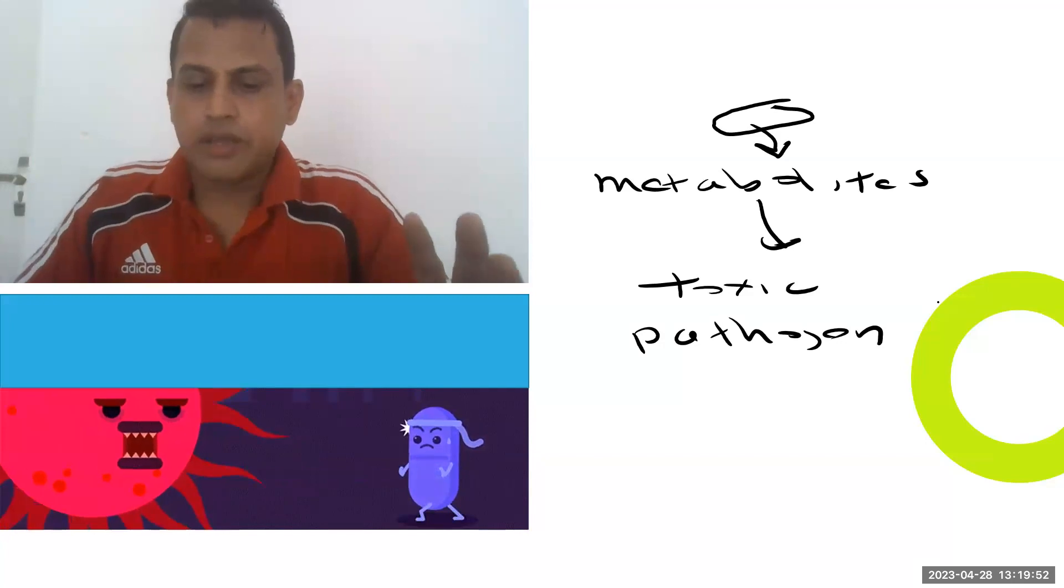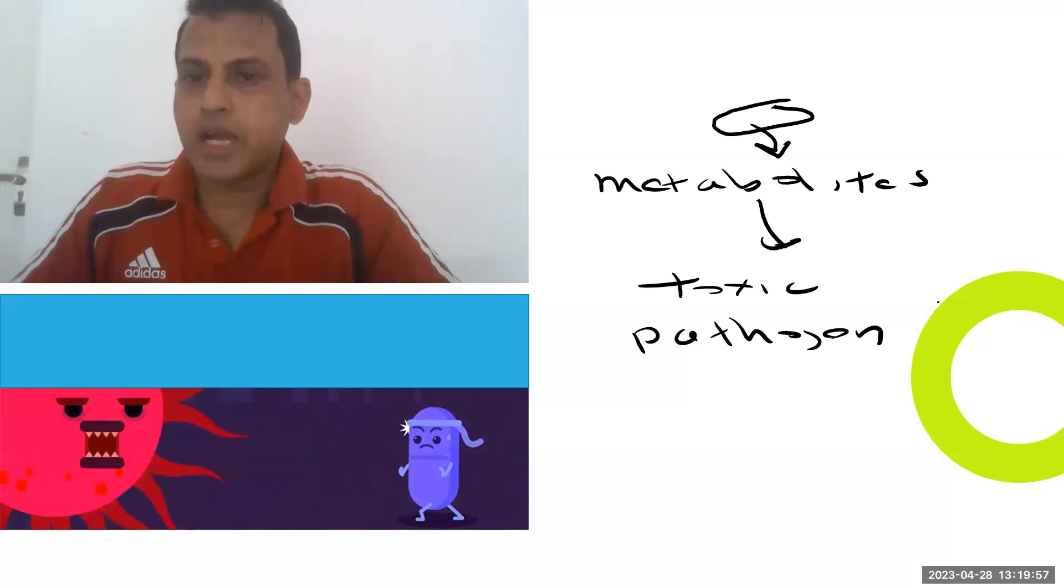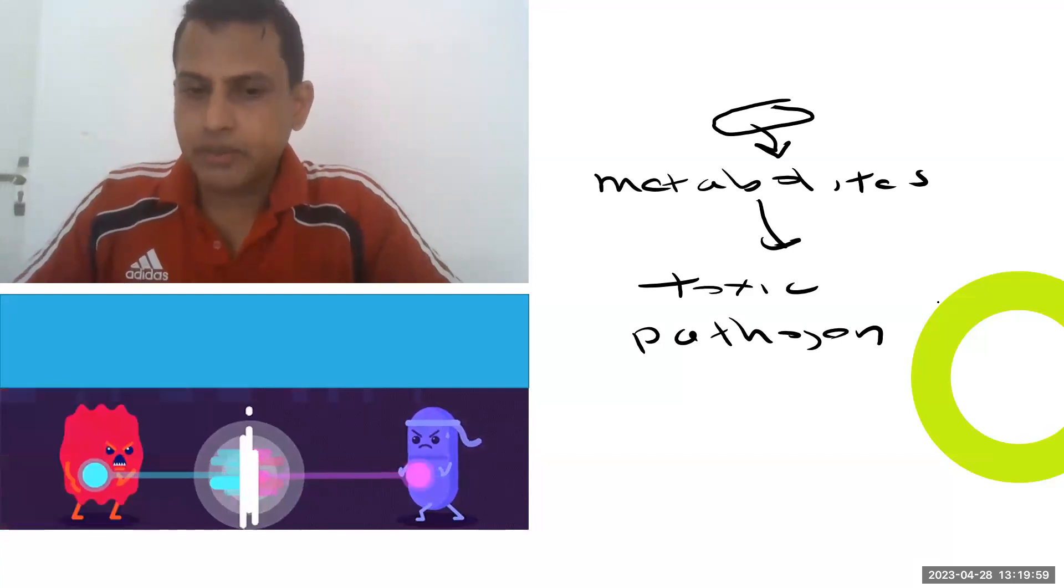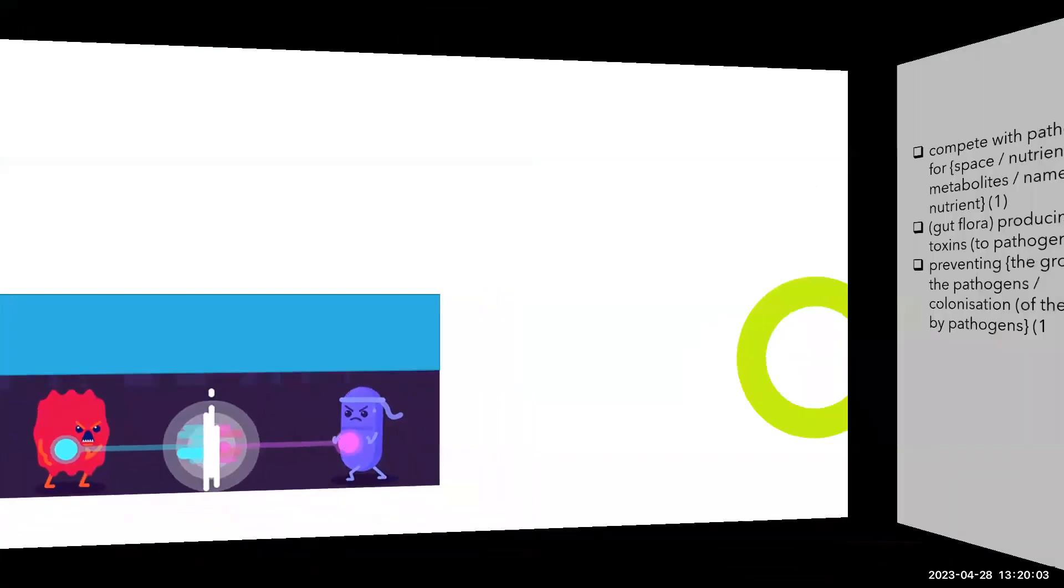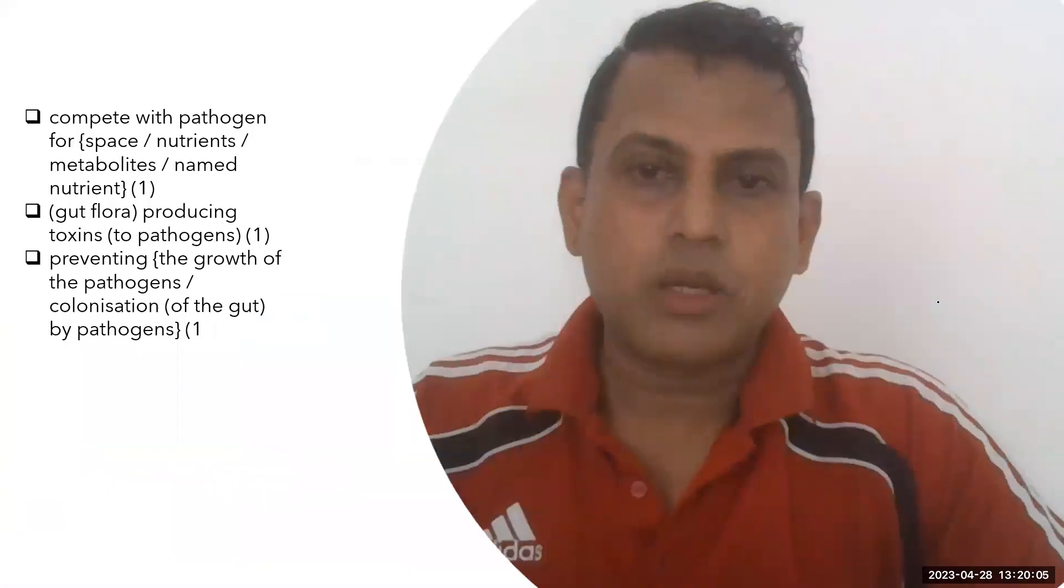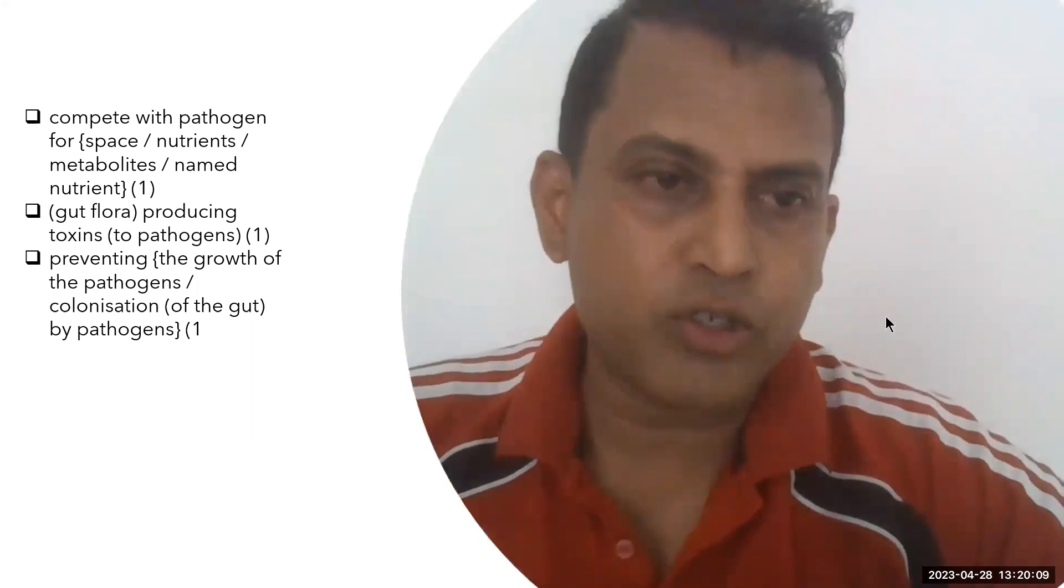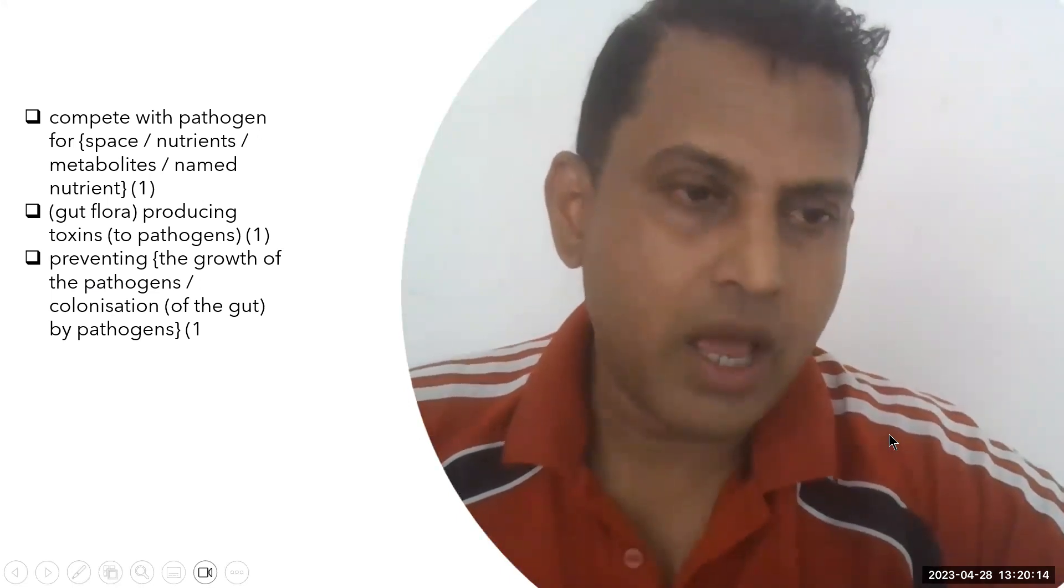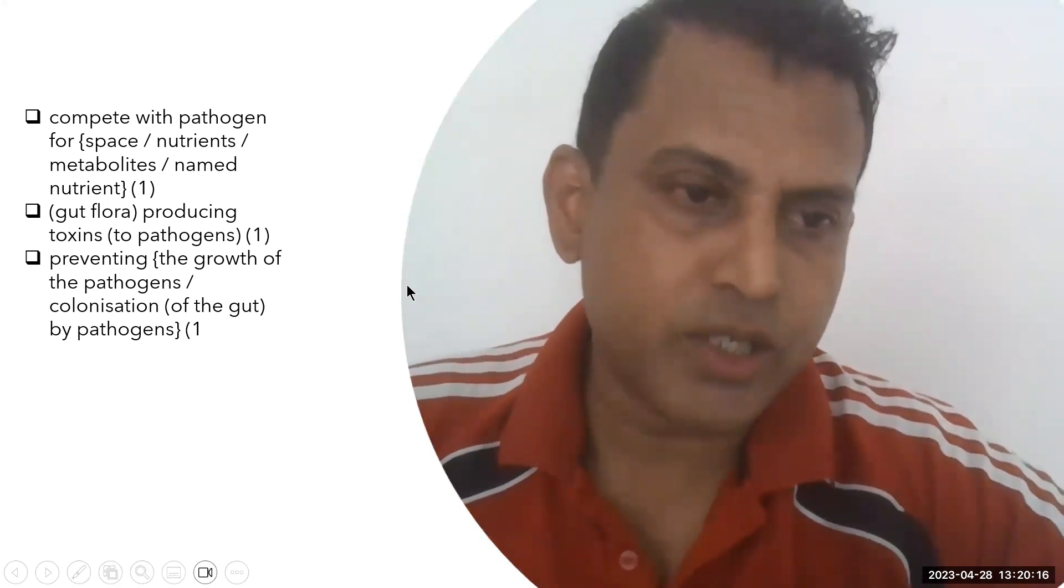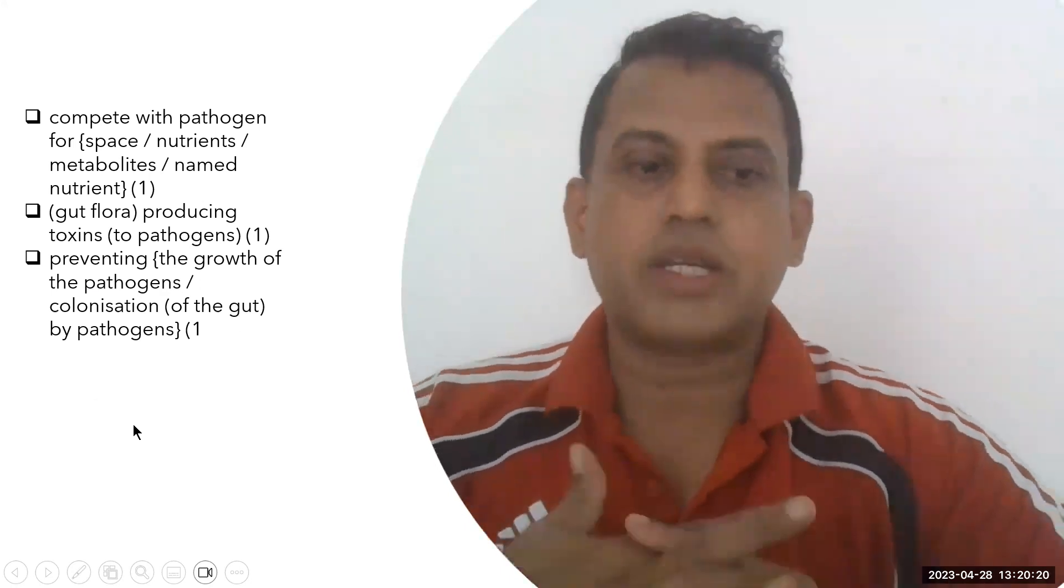So by main mechanisms, the competition for space and nutrition and production of toxin by gut microorganisms prevent colonization of pathogens. So you can find your answer within this range: compete with pathogens for space, nutrients, and metabolites, example glucose, amino acids; gut flora producing toxins to pathogens, preventing the growth of pathogen colonization of the gut.